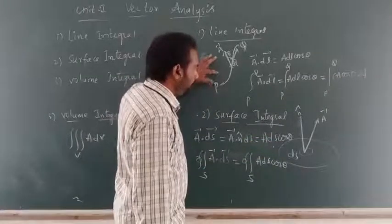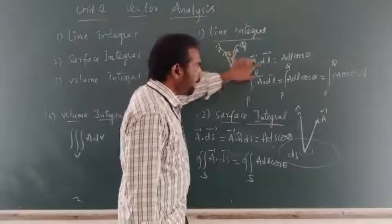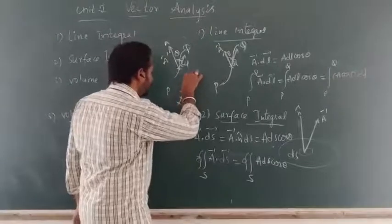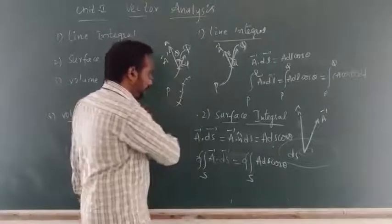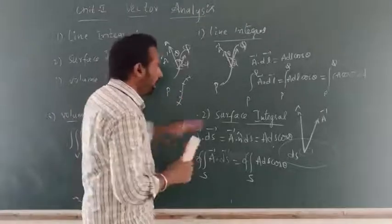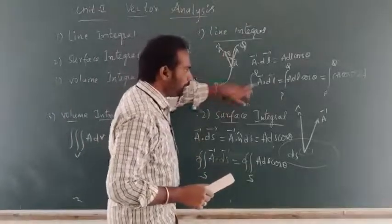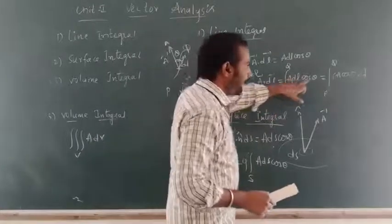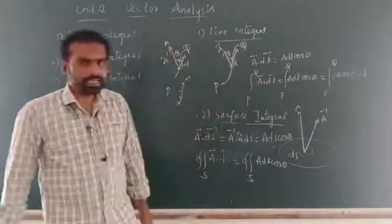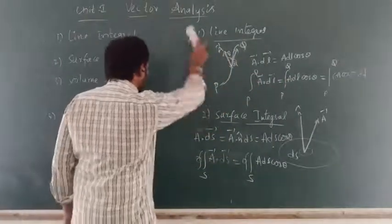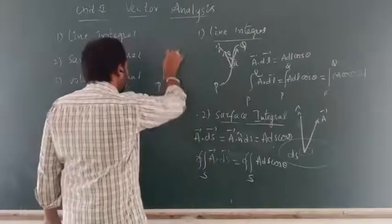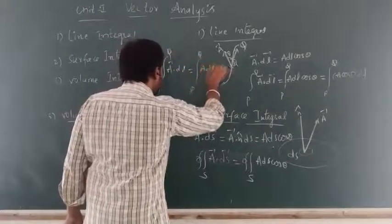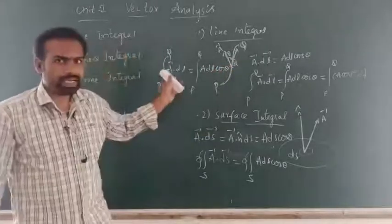For the entire curve from P to Q, for each small element DL it is A-bar · DL. Summing all the small elements over the curve, you get the line integration from P to Q: ∫(P to Q) A-bar · dL = ∫(P to Q) A dL cosθ. This is line integration. Mathematically, the line integral of a curve is ∫(P to Q) A-bar · dL or ∫(P to Q) A dL cosθ.